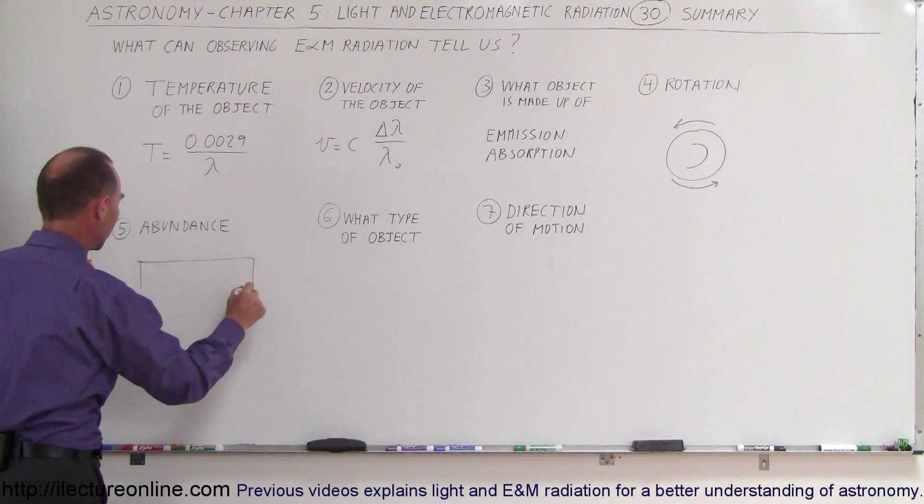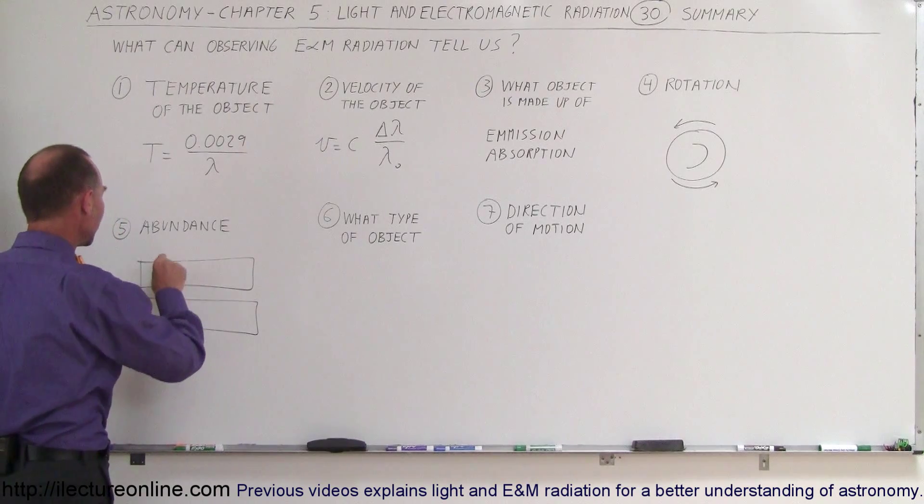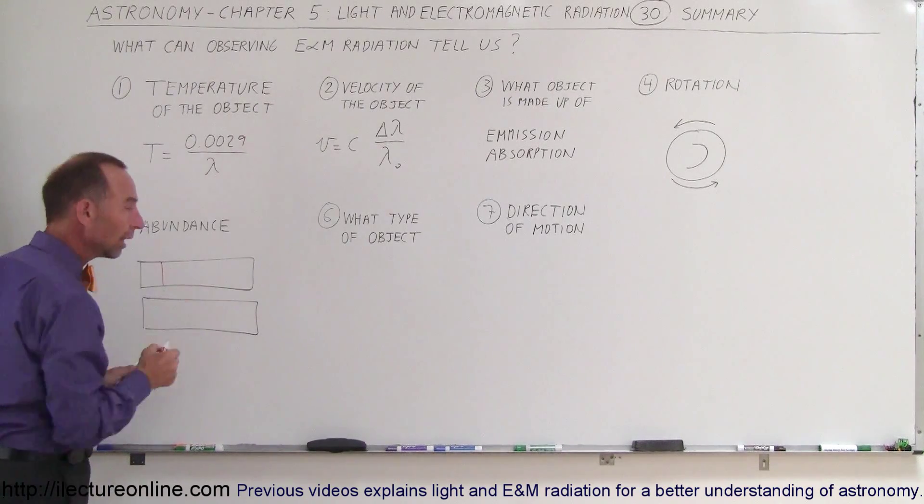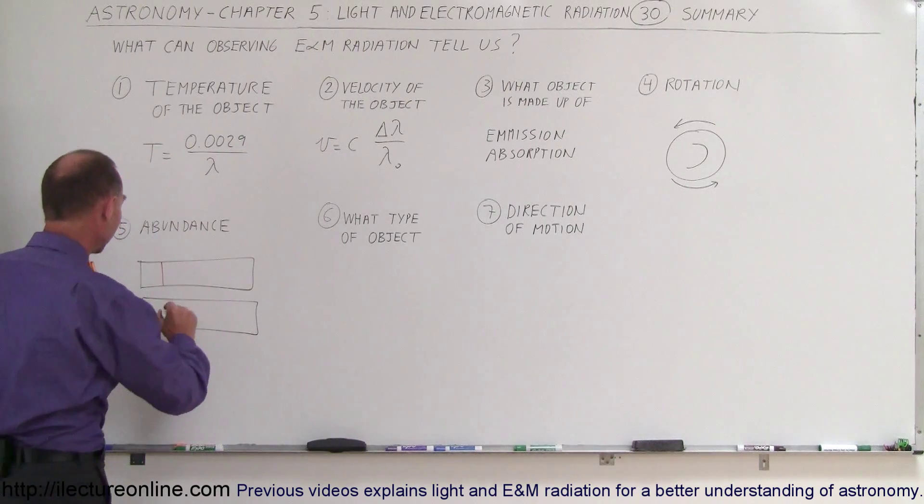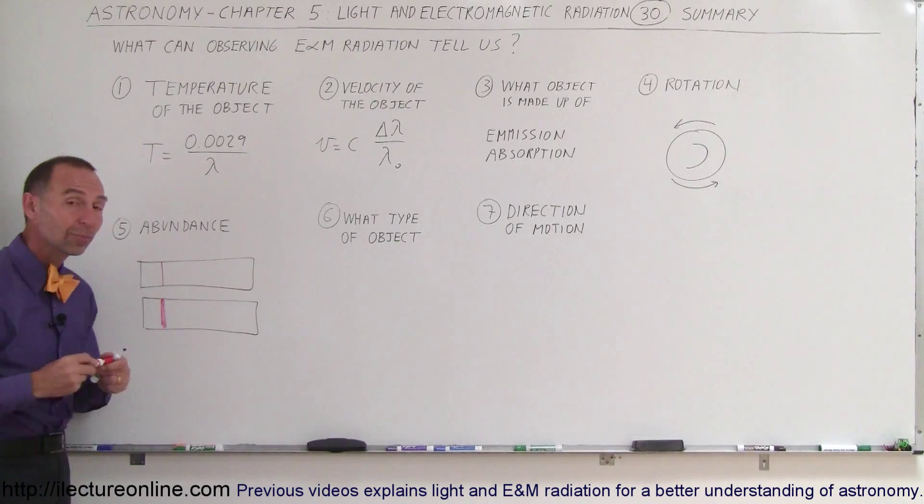For example, if you have a spectrum like this, an emission spectrum of hydrogen, and the line is very faint, you can barely see it, you would then conclude that there's not a lot of hydrogen there. If the line is very pronounced, then you can say there must be a lot of the hydrogen present.